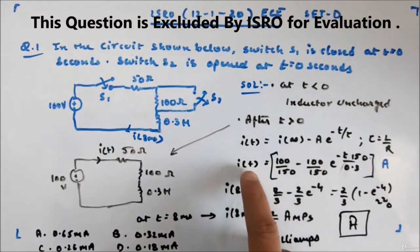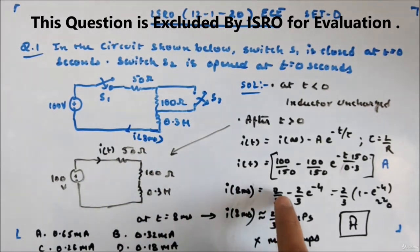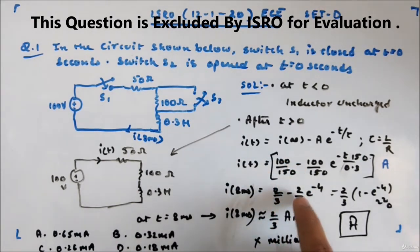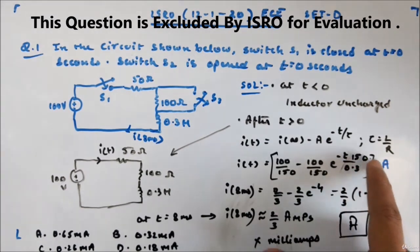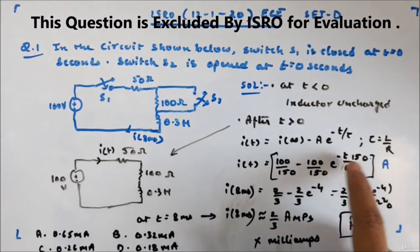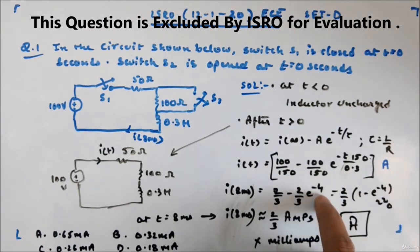If you calculate the current at t equal to 8 milliseconds, you will get 2 by 3 minus 2 by 3. This is 2 by 3, 100 divided by 150 is 2 by 3. 2 by 3 minus 2 by 3 e to the power minus 4. Since t, if you put 8 milliseconds, it will come out to be 8 into 150 divided by 0.3, which is 4.